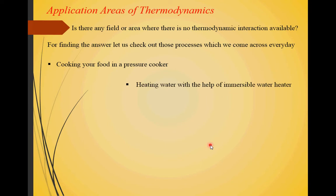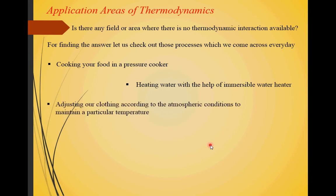The second example is heating water with an immersible water heater. Here, we provide electrical supply to the immersible heater, which converts electrical current into heat, which is then transferred to the water. This is conversion of one form of energy into another, so thermodynamics is involved here as well. The third example is adjusting our clothing according to atmospheric conditions to maintain a particular body temperature. As the atmospheric temperature changes, we adjust our clothing to maintain a comfortable, constant body temperature — so temperature and its maintenance matter here.